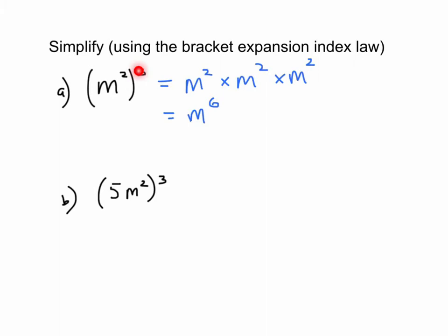Now here, this one is slightly different. There's a base of 5 but it has no power, but it's all raised to the power of 3. So I'll show you the long way first. You would multiply this by itself 3 times. So you're going to write that out: 5m squared times 5m squared times 5m squared. So you get 5 to the power of 3, m to the power of 6.